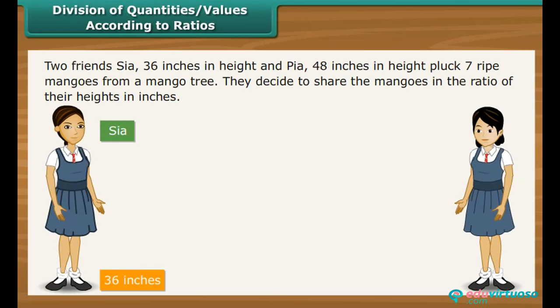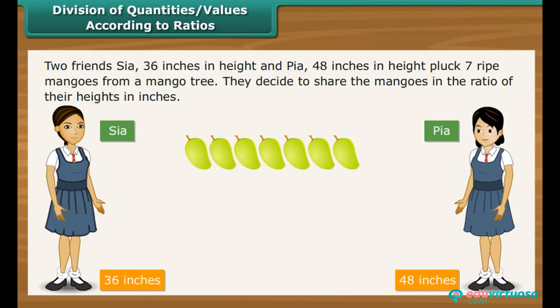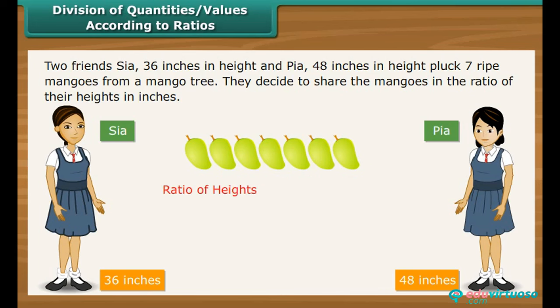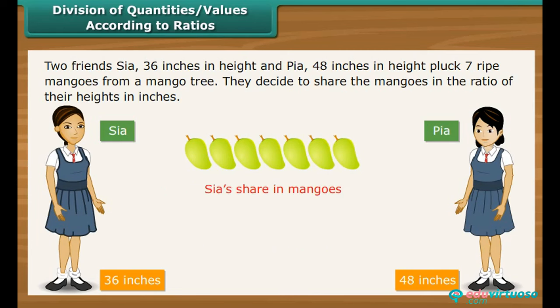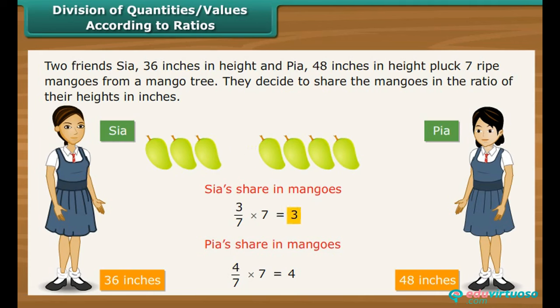Division of quantities according to ratios. Two friends, Sia (36 inches tall) and Pia (48 inches tall), pluck 7 ripe mangoes and decide to share them in the ratio of their heights. The ratio of their heights is 3 is to 4. Out of every 7 mangoes, 3 will go to Sia and 4 to Pia. Sia gets 3 out of 7 mangoes; Pia gets 4 out of 7 mangoes.